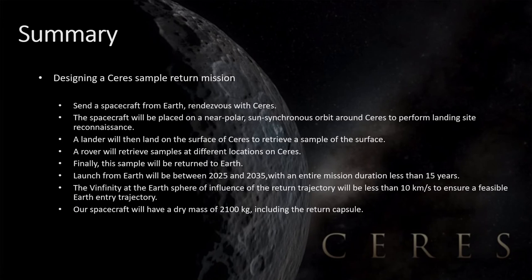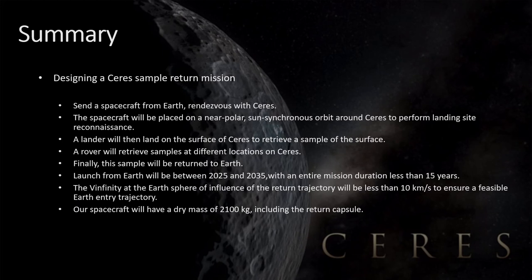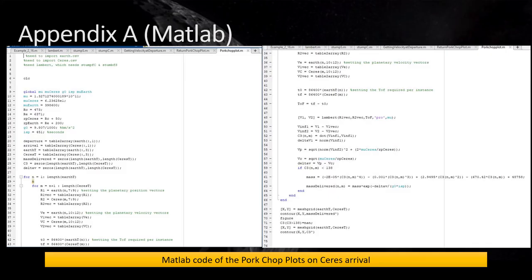Here is a summary of our Ceres sample return mission. We would first send a spacecraft from Earth to rendezvous with Ceres. The spacecraft will be placed on a near-polar sun-synchronous orbit around Ceres to perform landing site reconnaissance. A lander will then land on the surface of Ceres to retrieve a sample, and a rover will retrieve samples at different locations on Ceres. Finally, the sample will be returned to Earth. Launch from Earth will be between 2025 and 2035, with an entire mission duration of less than 15 years. The V-infinity at Earth's sphere of influence of the return trajectory will be less than 10 kilometers per second to ensure a feasible Earth re-entry trajectory. Our spacecraft will have a dry mass of 2,100 kilograms, including the return capsule and the rover. The following slides contain samples of our MATLAB and FreeFlyer code used to conduct our mission.